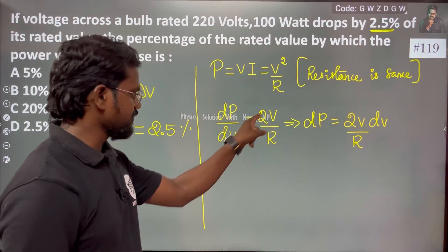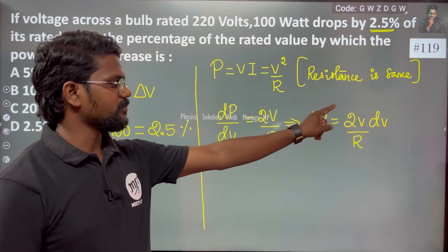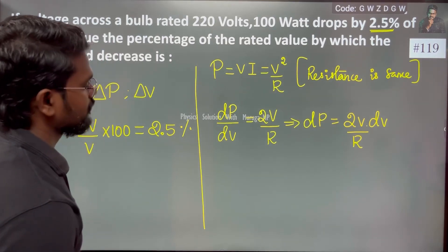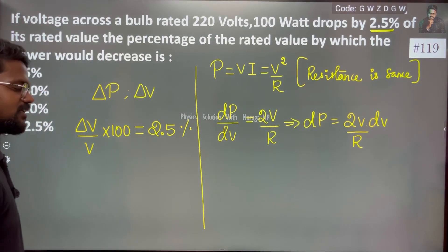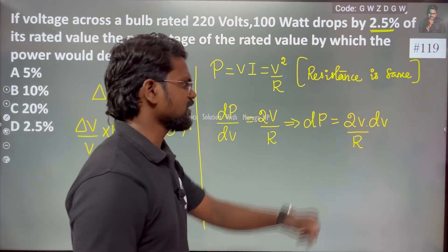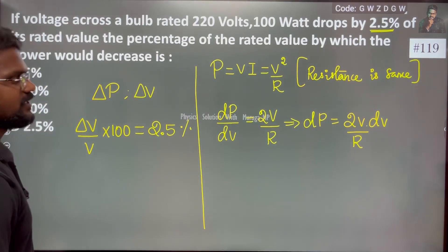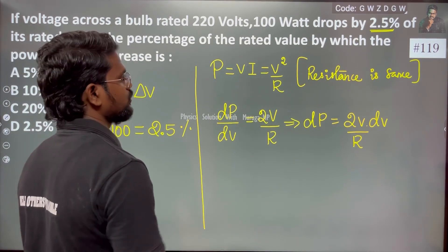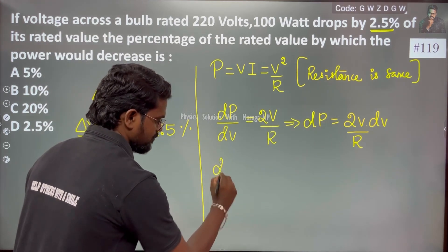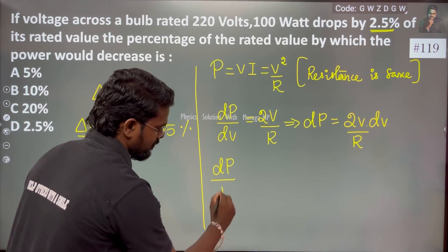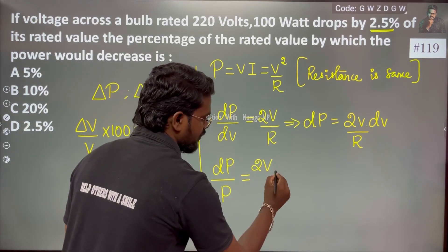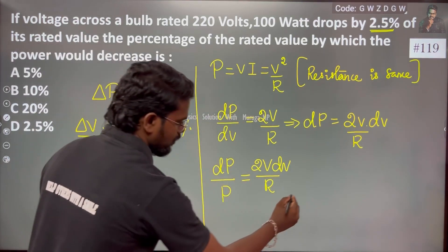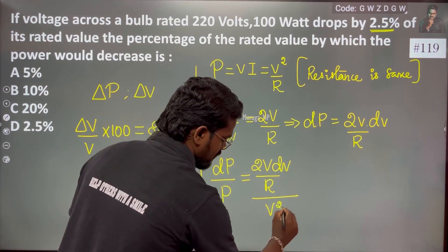So we can say dp is equal to 2V dV by R. So if we divide: change in power dp by power P. So dp by P equals 2V dV by R, divided by V squared by R.